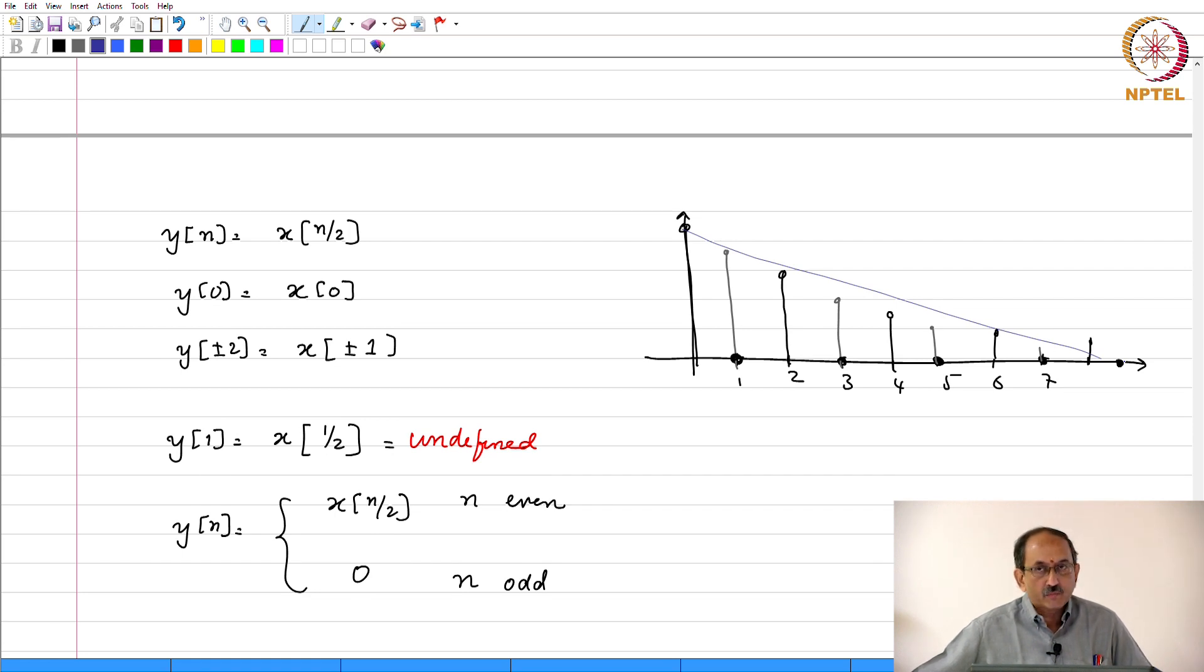Therefore, right here you see when it comes to the affine transformation, there are important differences between continuous time and the discrete time case. We will stop here for the day because we are out of time.